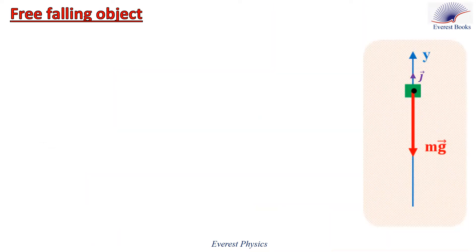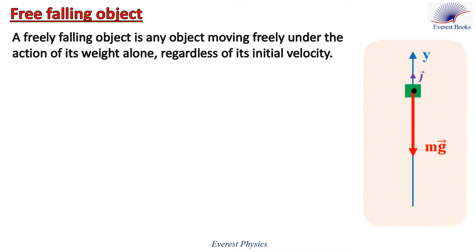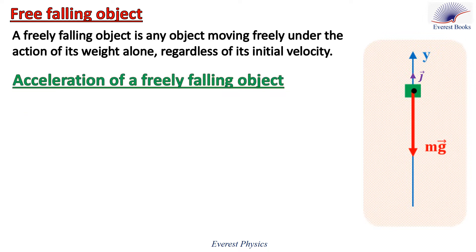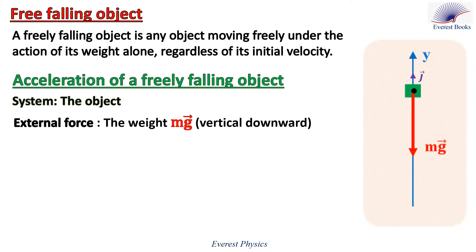Let's study freely falling objects. A freely falling object is any object moving freely under the action of its weight alone, regardless of its initial velocity. Let's determine the acceleration of this object. The system is the object. The external forces acting on this object is only its weight, which is directed vertically downwards.